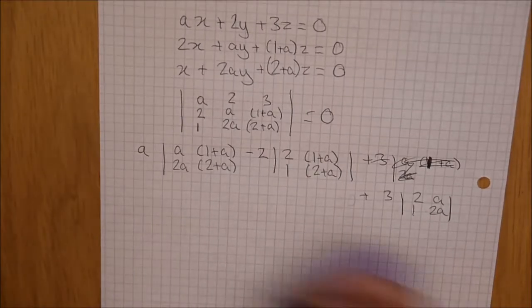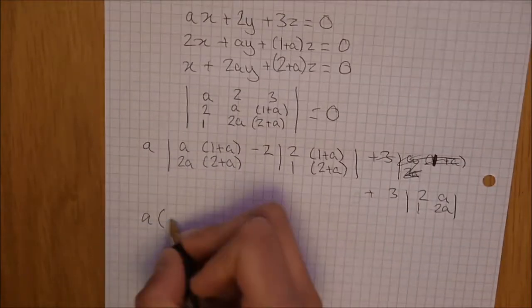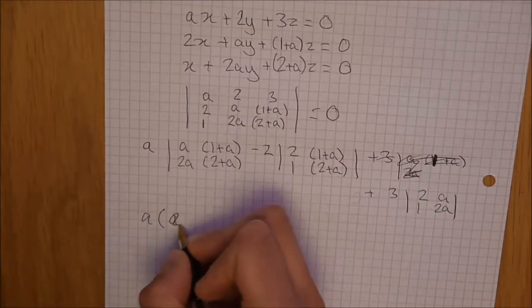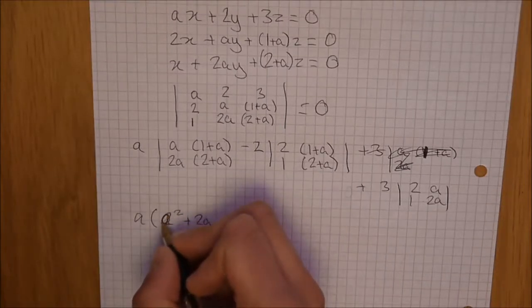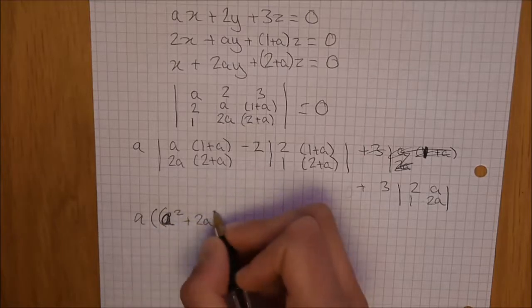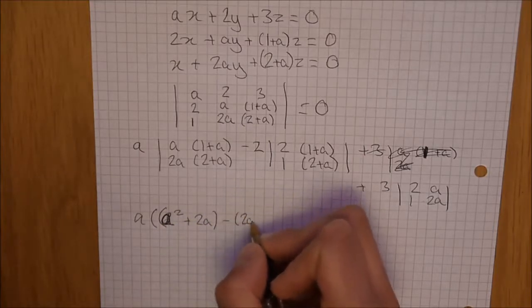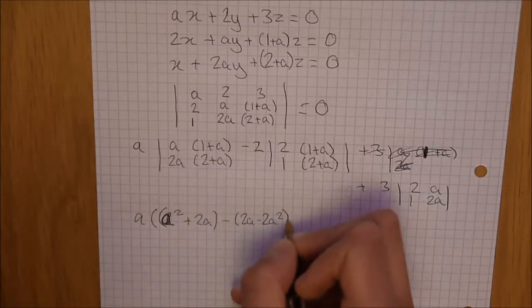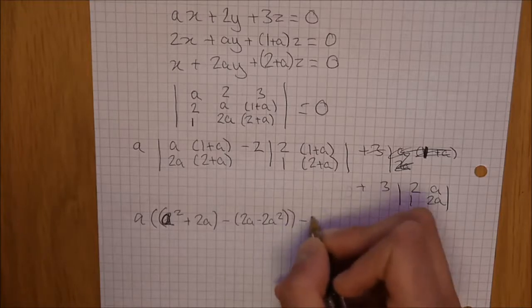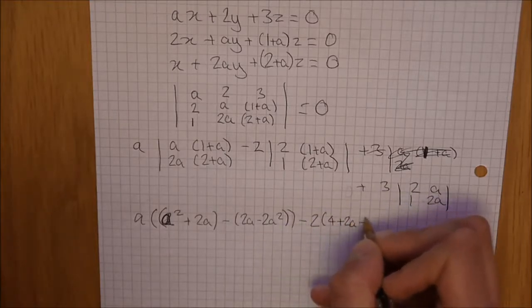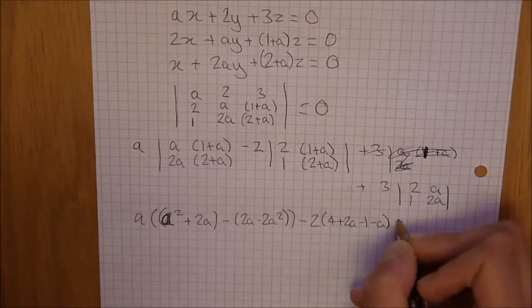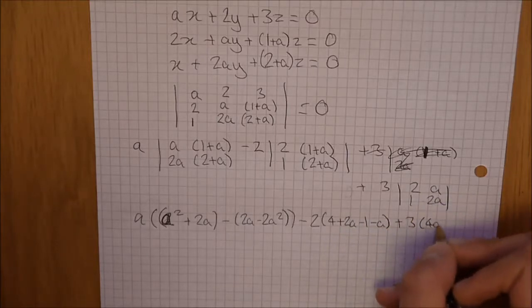So, to expand outwards, we have a lots of a squared plus 2a minus 2a minus 2a squared minus 2 lots of 4 plus 2a minus 1 minus a plus 3 lots of 4a minus a.